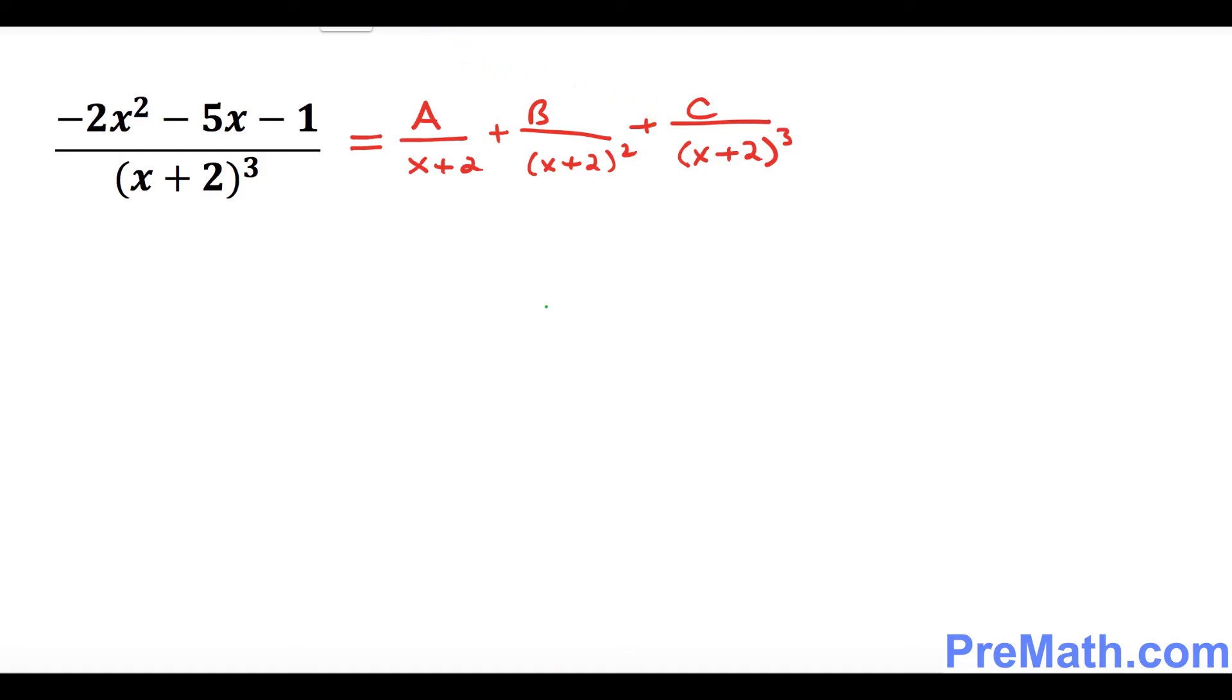Now the next step, what we want to do is I want you to get rid of these fractions. So in order to get rid of fraction, I want you to multiply whatever this quantity is, multiply across the board. So I'm going to multiply x plus 2 power 3, x plus 2 power 3, x plus 2 power 3, and x plus 2 power 3.